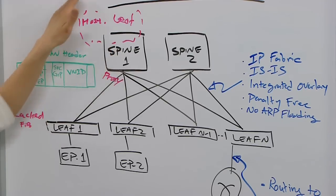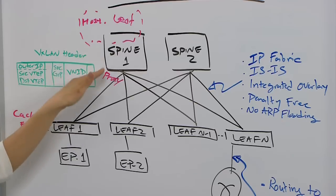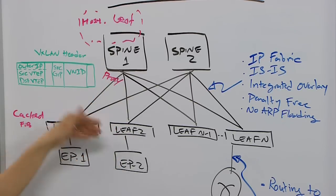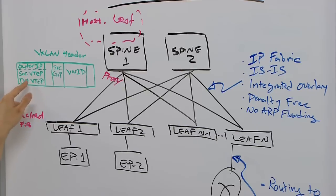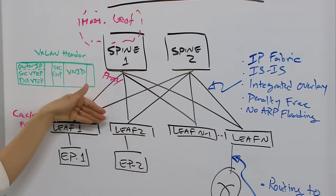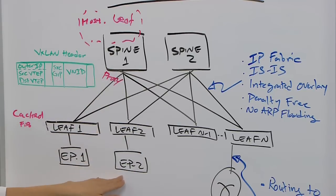And then SPINE will have the complete information. It's going to resolve the egress leaf location for the packets, and then change the destination VTEP to leaf 2, which is the egress leaf, and then forward packets down to the destination end-host.